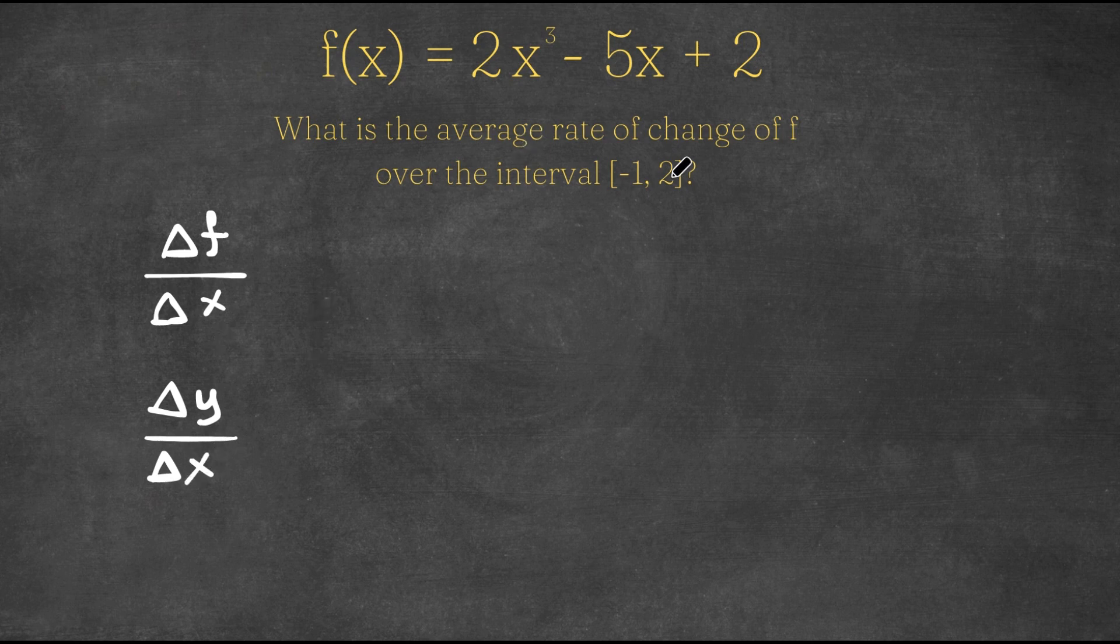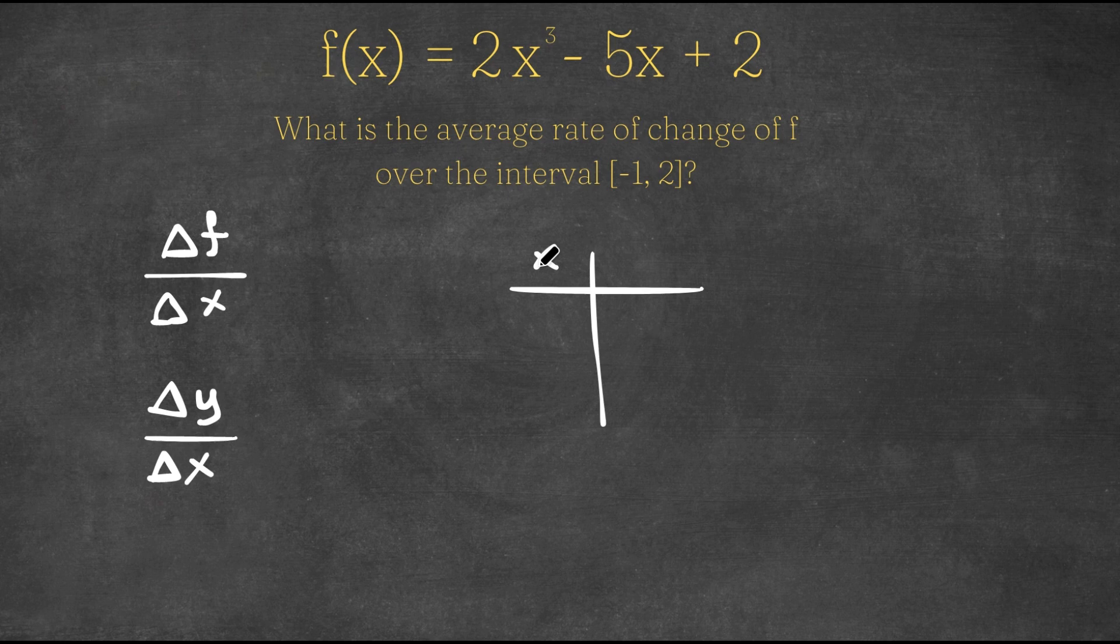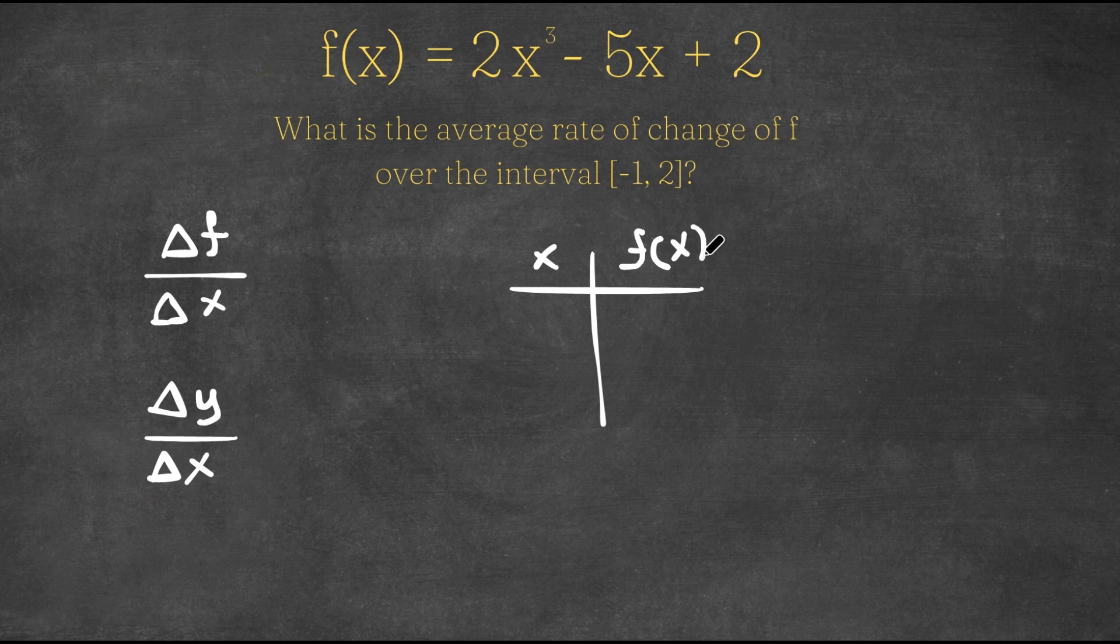So let's first make a table here. We have our x and we have f of x. Now, for x, we only have two values. We have negative 1 and 2. So we have negative 1 and we have 2.